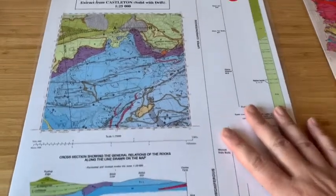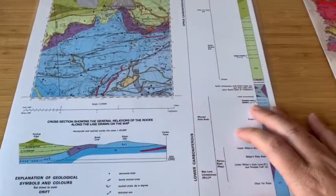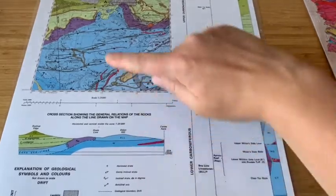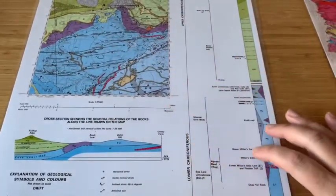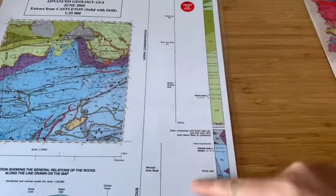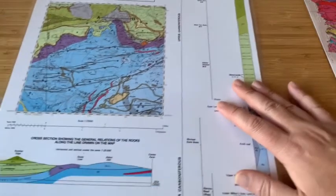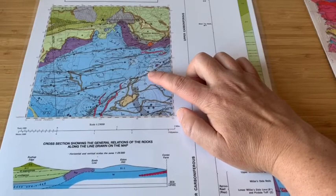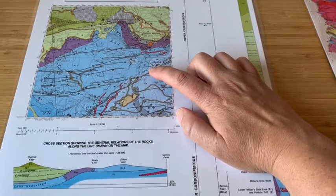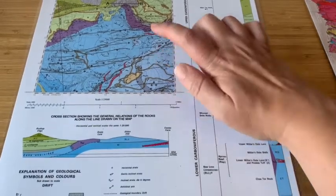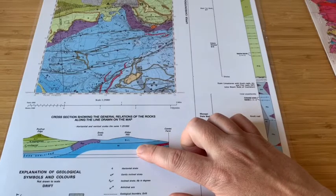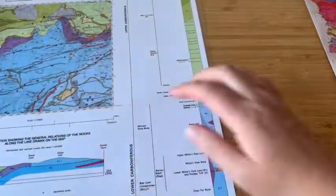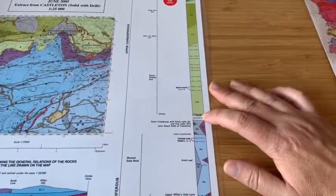So what can you find on one of these extracts? There are three things. We have the actual geological map, we have a cross section that's been drawn going across part of the geological map, and then we've also got this thing down here which is a geological column. The cross section is very familiar — it gives you a hint of the geological structure across the map. But the geological column over here is something you've not come across before.